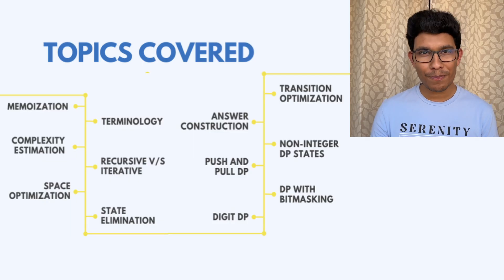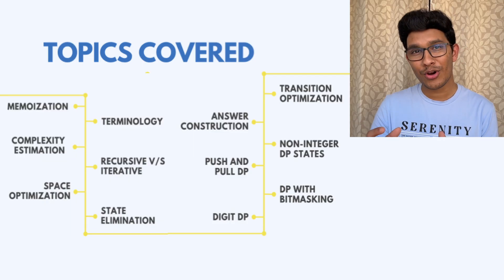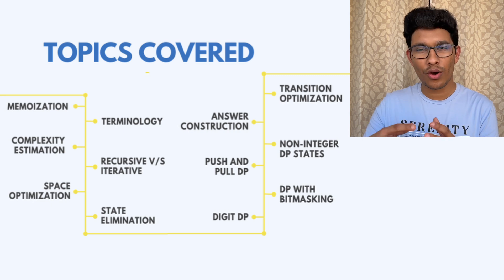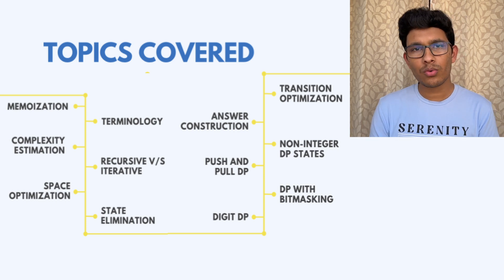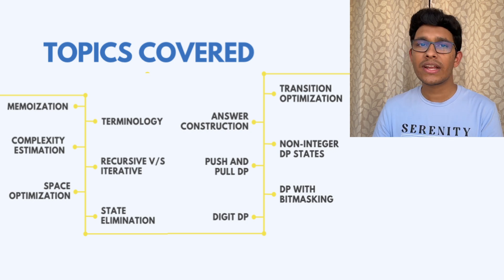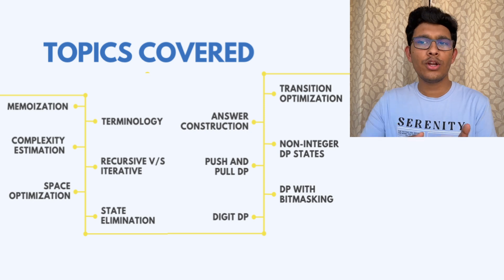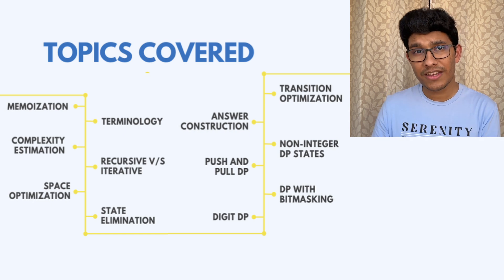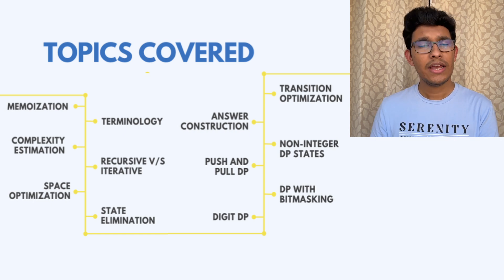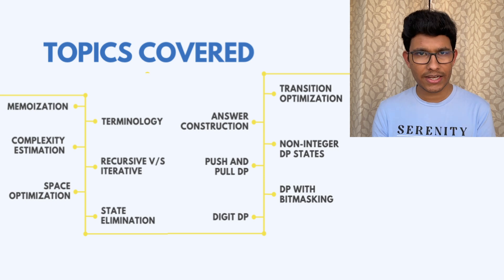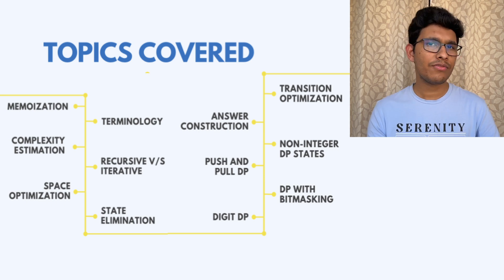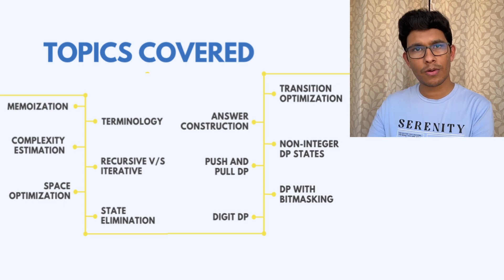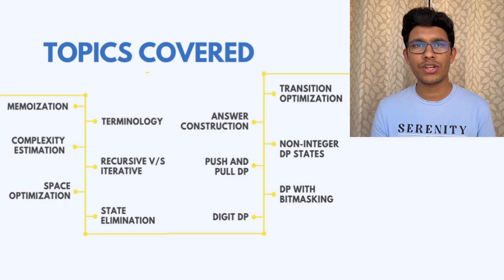Let's talk about the topics we're going to cover in this boot camp. We'll start from memoization, which is an optimization on recursion. Then we'll go on to understand the terminologies used in dynamic programming solutions. Next, we'll cover how to evaluate time and space complexity of DP solutions, then how recursive and iterative solutions work and how to convert one into the other. We'll also understand certain optimizations in DP such as space optimization, transition optimization, and state elimination. If you don't understand these concepts right now, it's completely okay — we're going to have a very structured path.